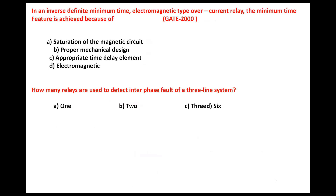The inverse definite minimum time feature in an electromagnetic type overcurrent relay — the minimum time feature is achieved because of the saturation of the magnetic circuits. If the CT saturates, you get that definite minimum time feature. If the CT is not saturated and current increases, the time keeps on decreasing. Once the CT saturates, the operating time becomes more or less constant.